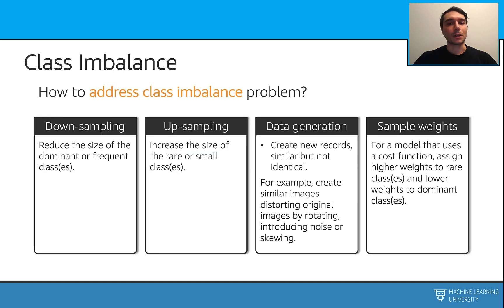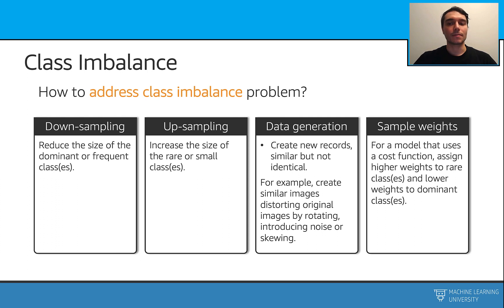How can we solve this problem? We can down-sample the dominant class. We can up-sample the small class. Or we can do some type of data generation. Or we can also apply some sample weights.